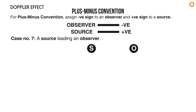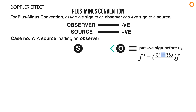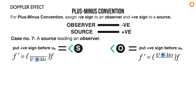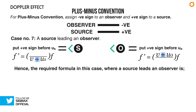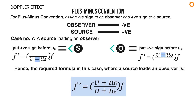Case number seven: a source leading an observer. The source and observer move in the same direction, but the observer lags behind the source. The observer moves towards the source, so put a positive sign before u₀. The source moves away from the observer, so put a positive sign before uₛ. The required formula is: f prime equals to (v plus u₀) divided by (v plus uₛ) times f.